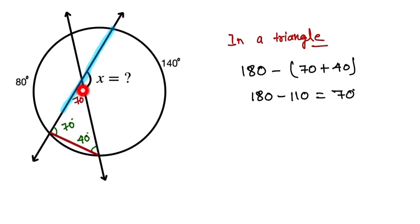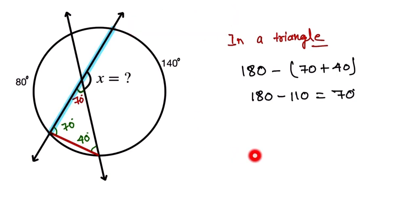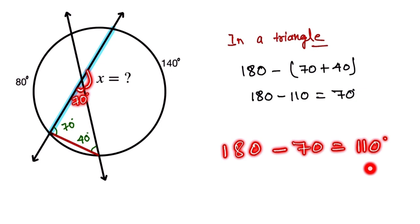This one is a straight line. From the straight line, again we subtract, because on the straight line there is 180 degrees. We subtract 70 from 180. So 180 minus 70 is equal to 110 degrees.